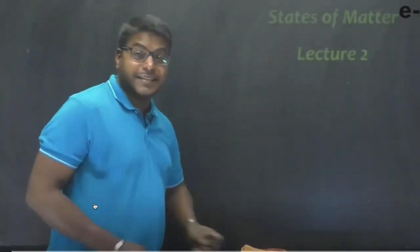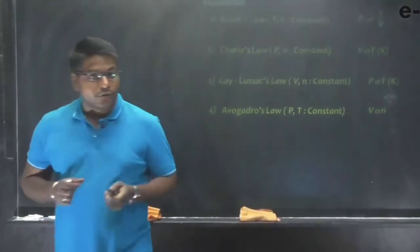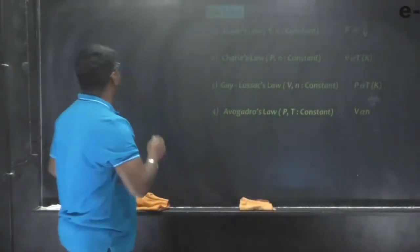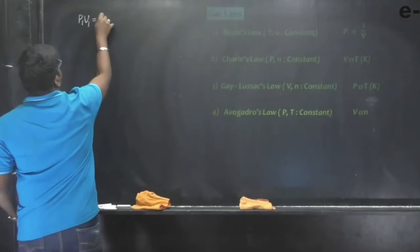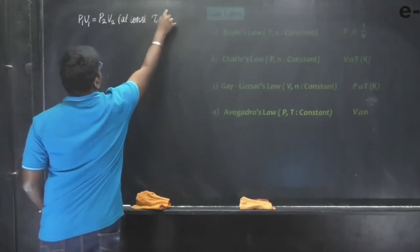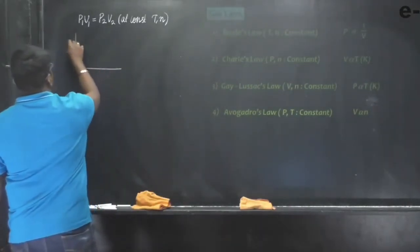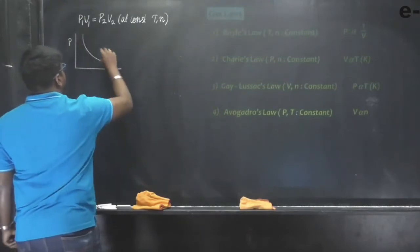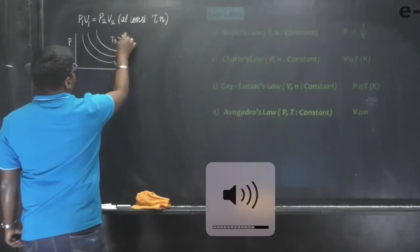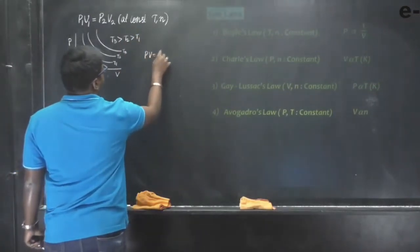Hello students. Yesterday we were discussing about the gaseous laws and first we discussed about Boyle's law. Today we will continue with Charles' law. Boyle's law tells us pressure is inversely proportional to volume, and P1V1 = P2V2 at constant temperature and for a fixed number of moles of gas. The P versus V graph shows rectangular hyperbolas in the form of PV = constant.